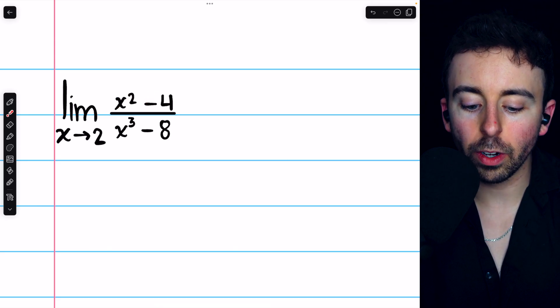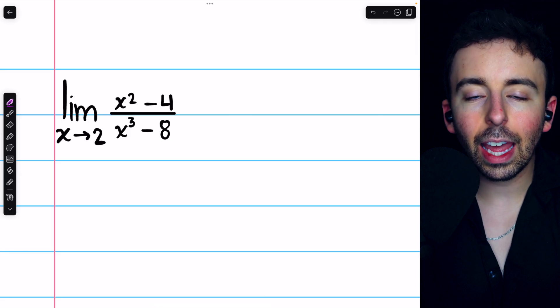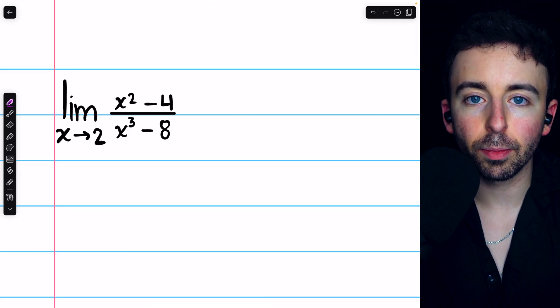The limit of x squared minus 4 divided by x cubed minus 8 as x approaches 2 can't be evaluated directly by substitution.